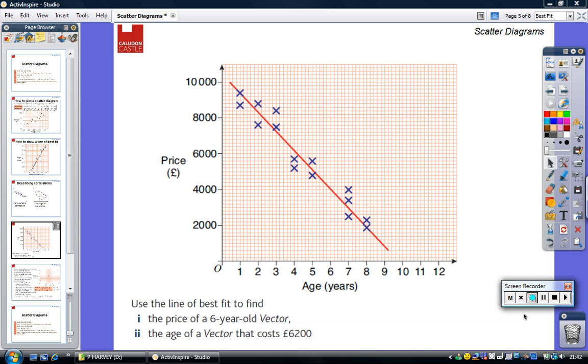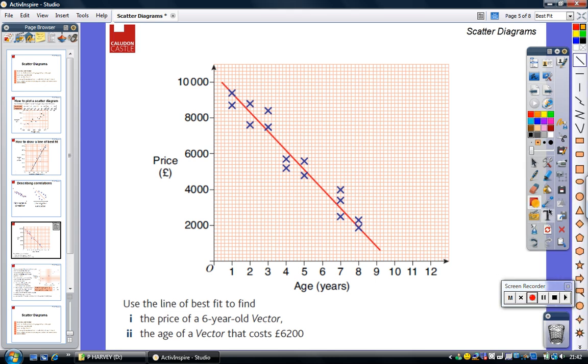A line of best fit can be used to estimate other data values. Here I've got a question that wants me to use the line of best fit to estimate the price of a six-year-old vector. So the way I do that is I draw a line up from six until I reach my line of best fit.